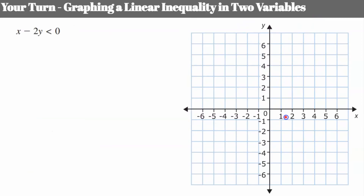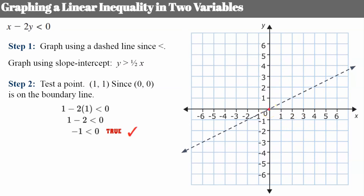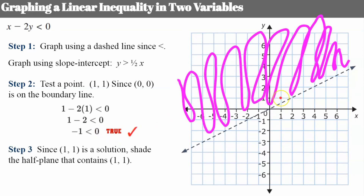Your turn — pause, graph, test your point and shade, then come back. Welcome back. Step one: graph a dashed line since it's less than. Solving for y gives y > ½x, with a y-intercept of 0, rise 1, run 2 — draw the dashed line. Since (0, 0) is on the boundary line, test (1, 1) instead. Replace x with 1 and y with 1: 1 - 2 = -1, and -1 is indeed less than 0 — true. So (1, 1) is in the solution area; shade everything above the boundary line.